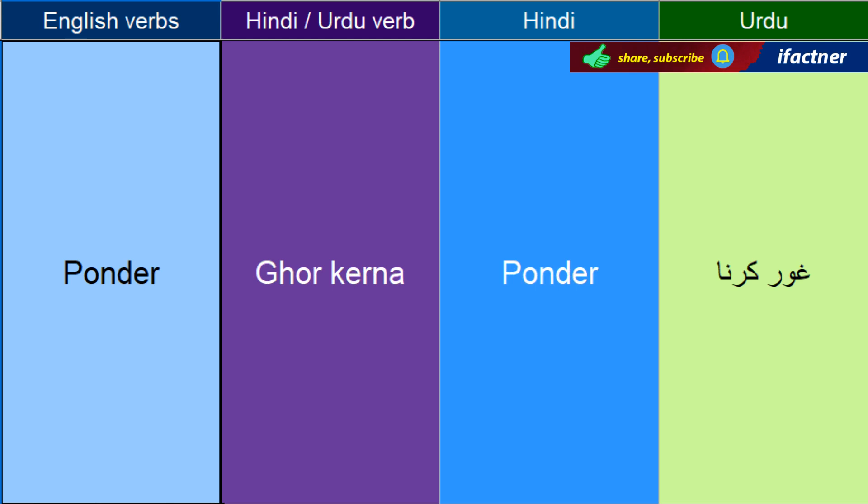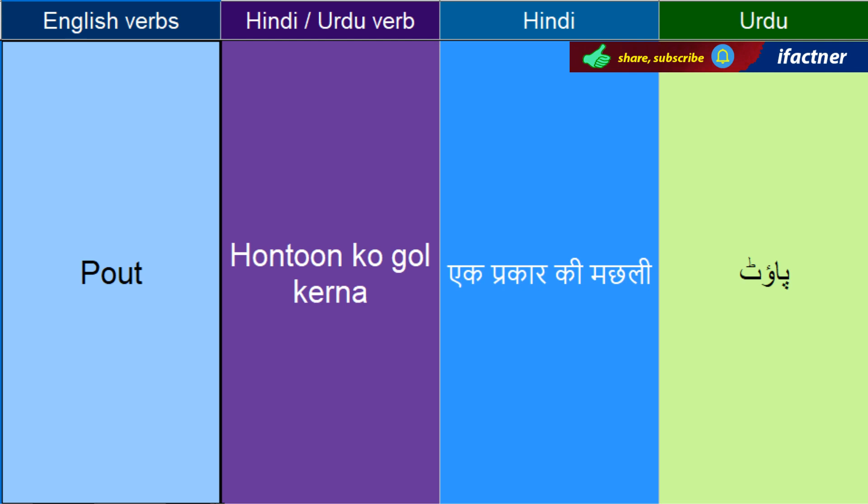Gaur kerne ko kehthayain — Ponder. Point to the ponder. Daalne ko — Pour. Jis tarah is mein, is jag mein daal do — se kehengay Pour. Pour the water in the glass — glass mein paani daal do. Hauntung ko gol kerne ko kehthayain — Pout. Hauntung ko gol gol mug karke loog selfiyaan leetayain, usi se nikla hai pouting.